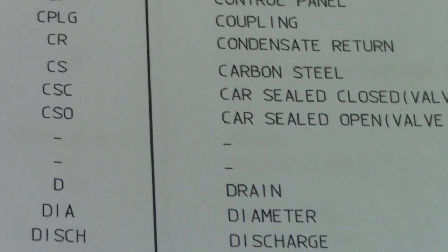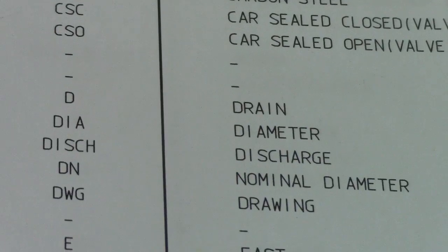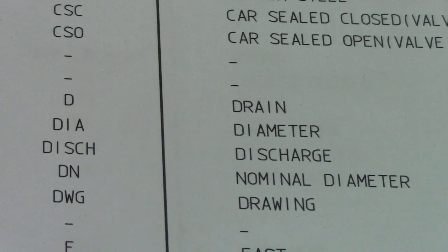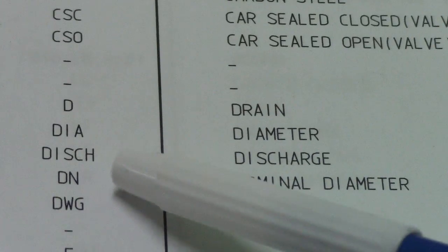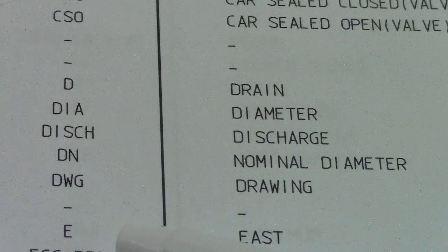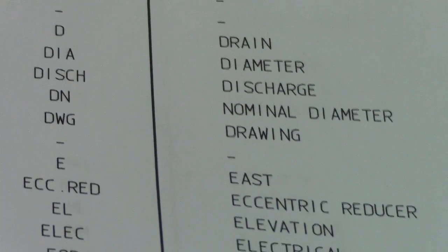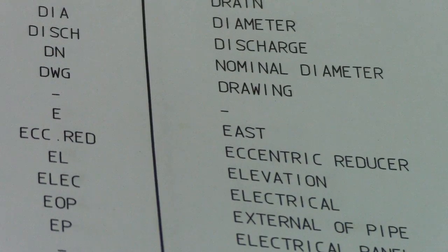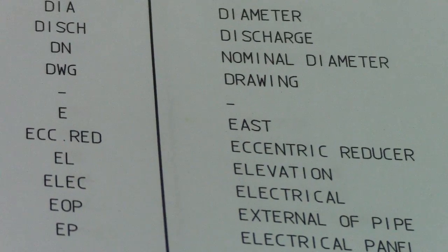D is drain, DIA is diameter, DISC is discharge. DN is nominal diameter — you'll commonly see this in isometric drawings. E is east, and ER is eccentric reducer. EL is elevation, ELEC is electrical.